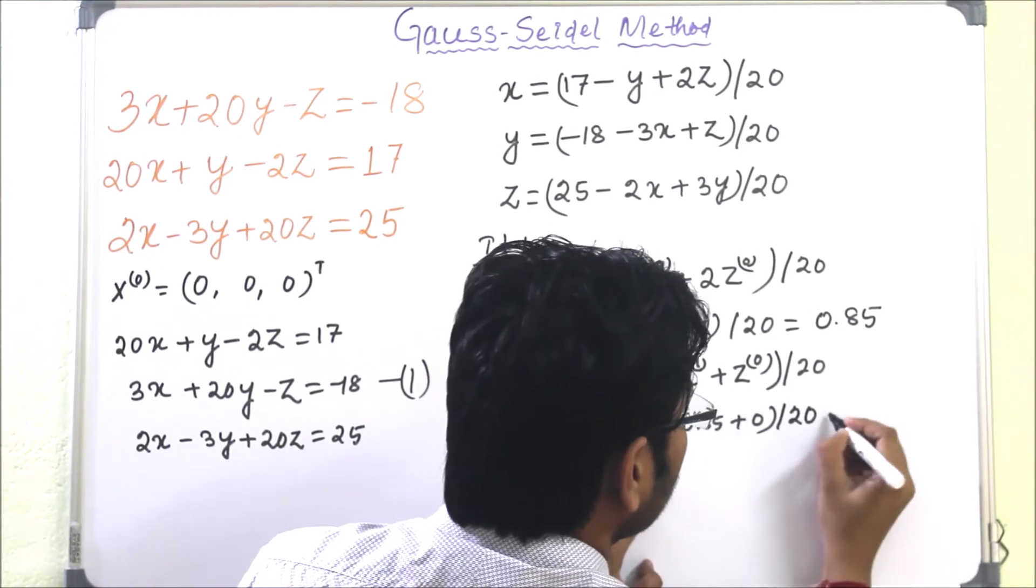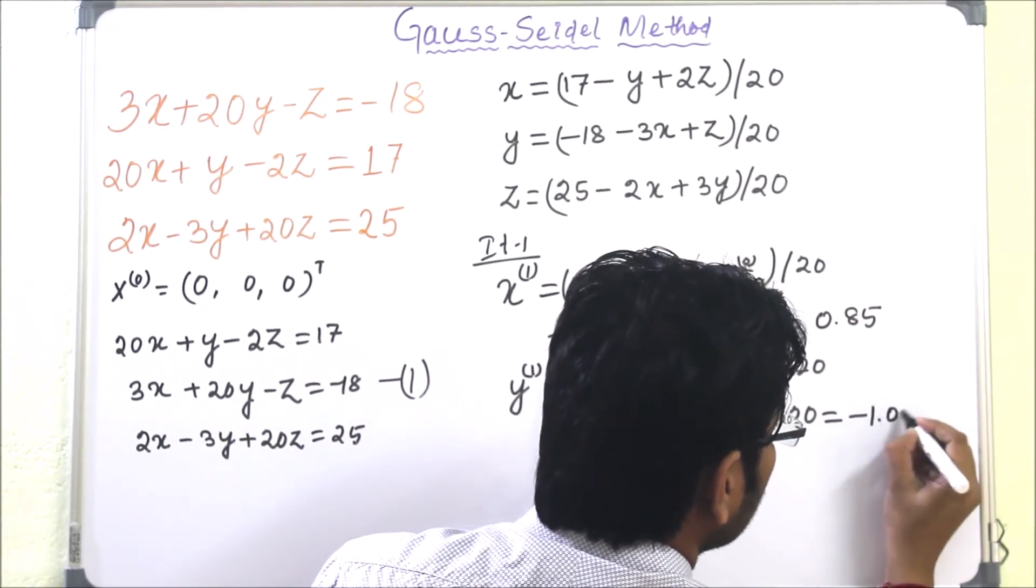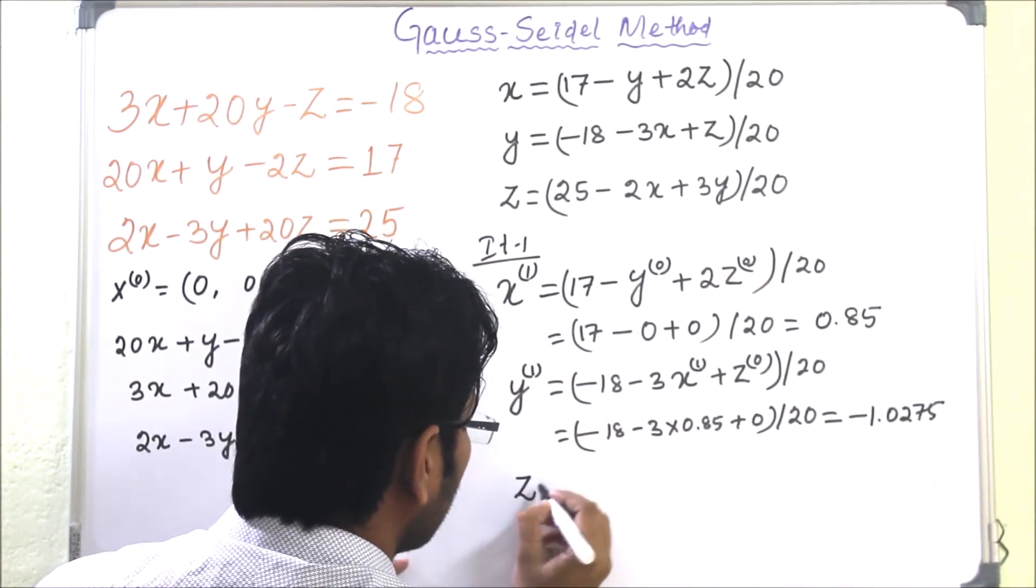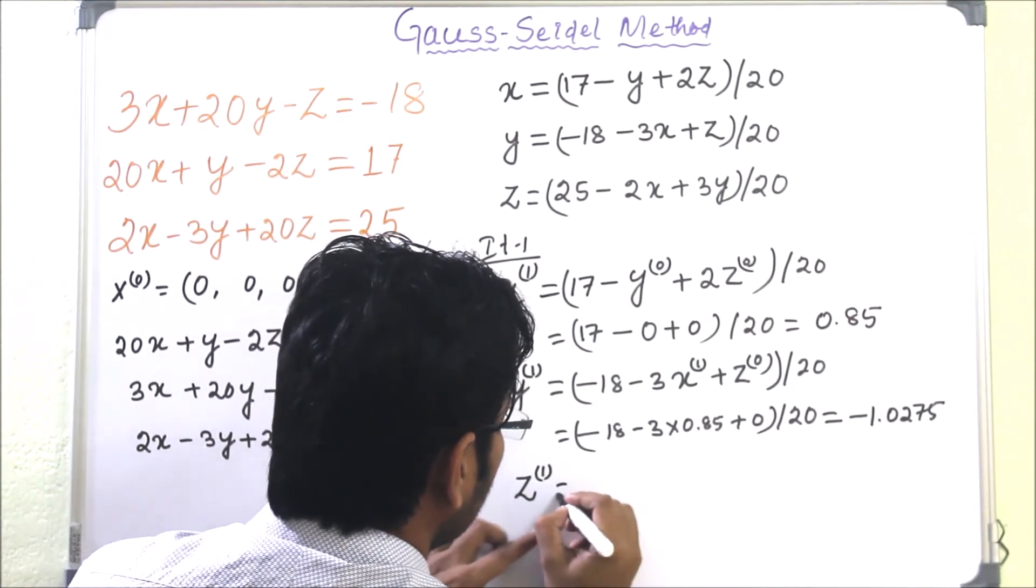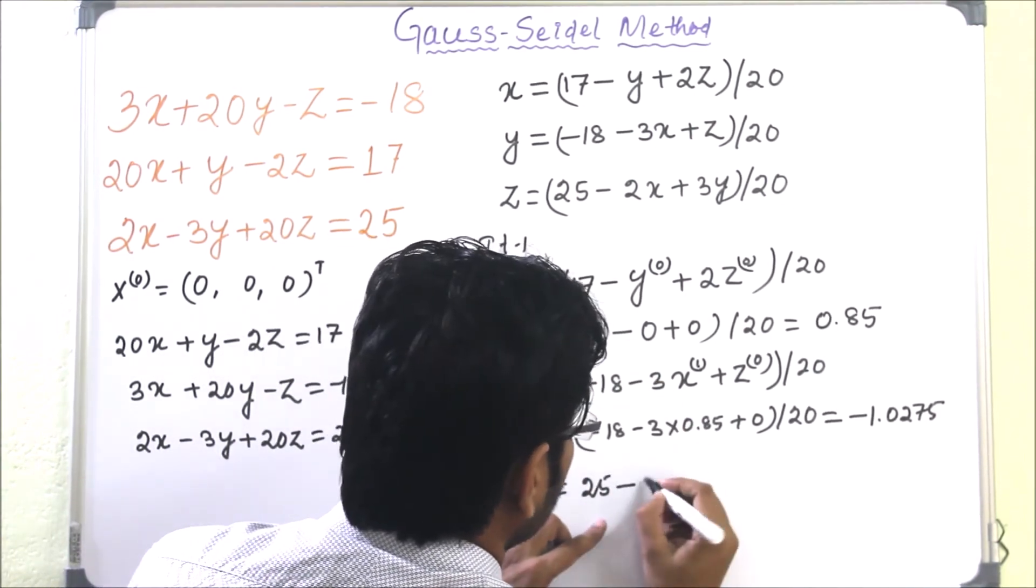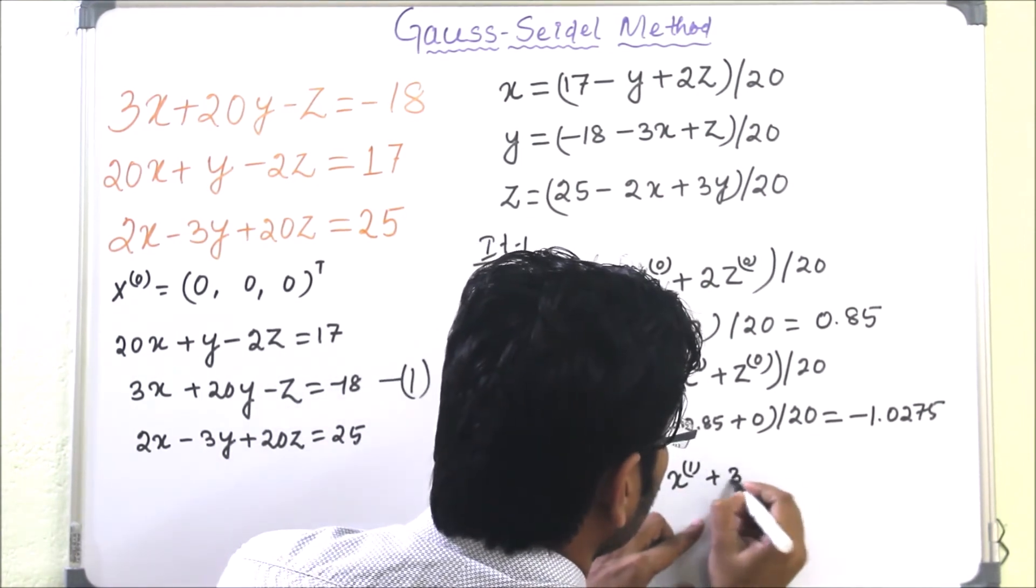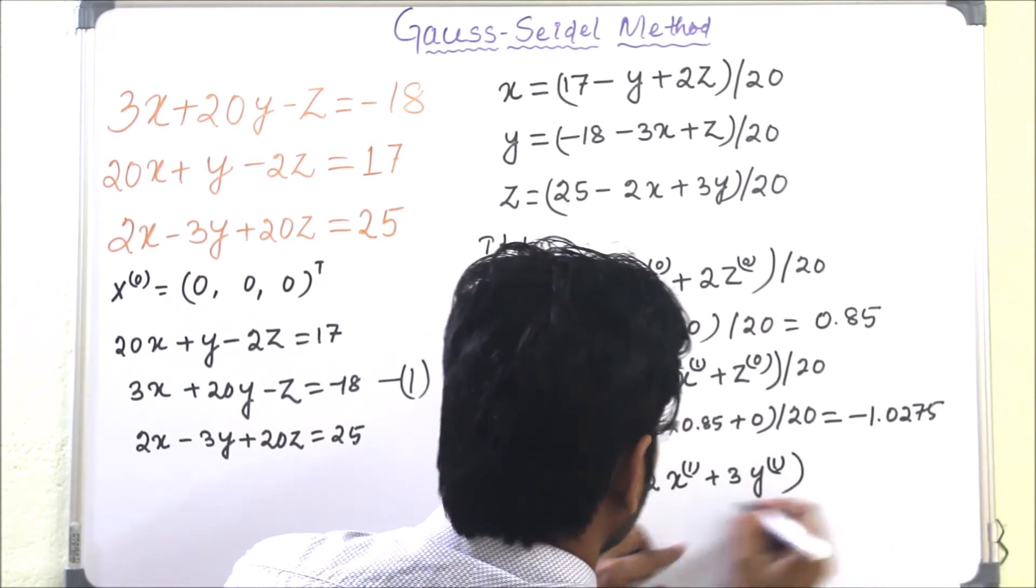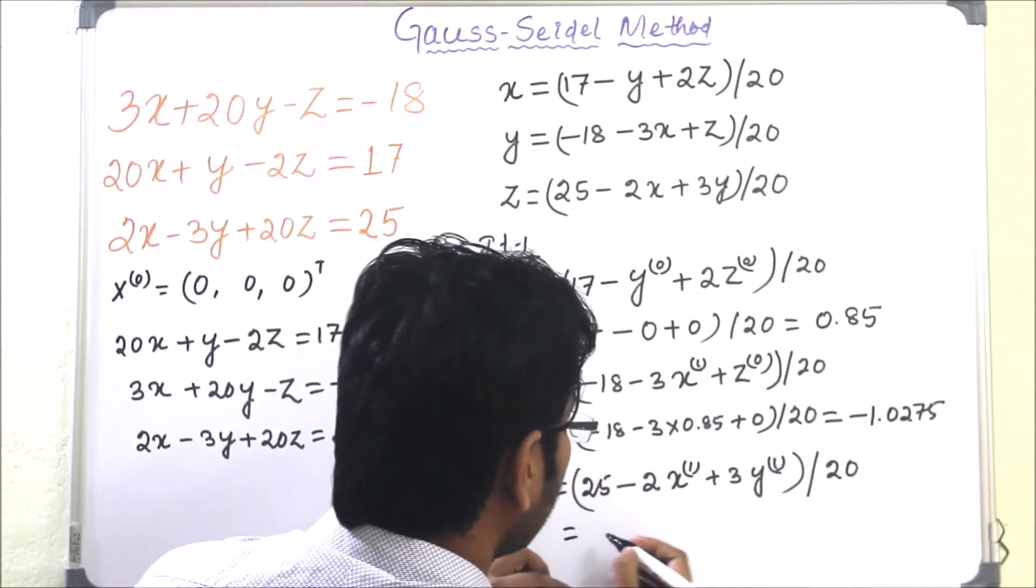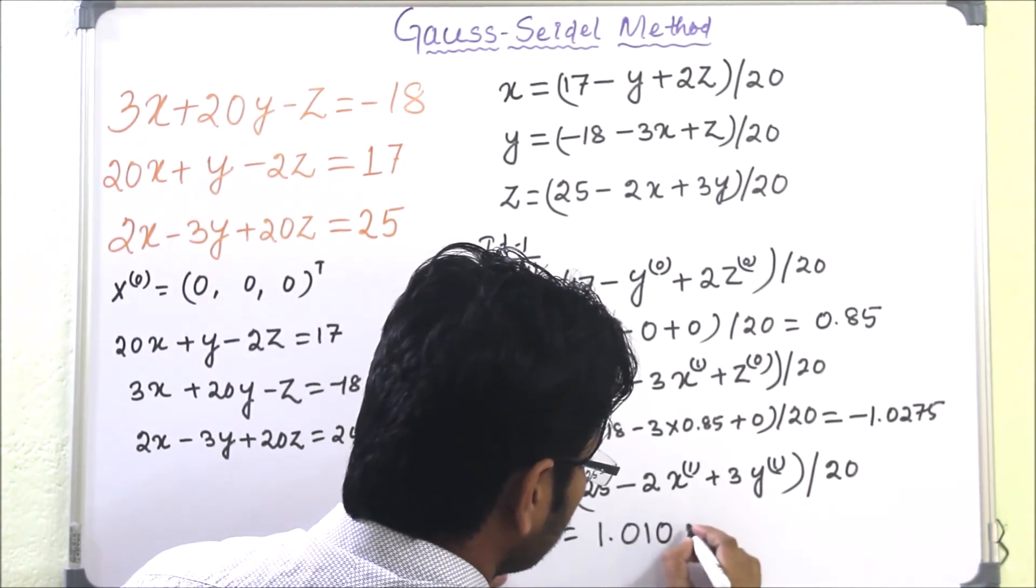So Z1 will be (25 minus 2 times X1 plus 3 times Y1) divided by 20. And the value will be 1.0109.